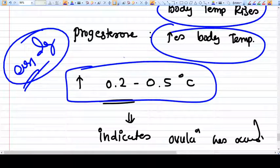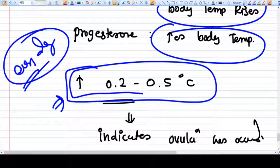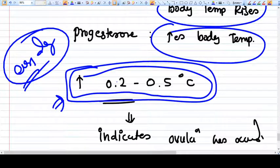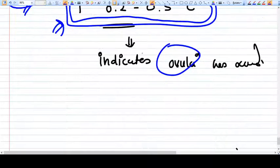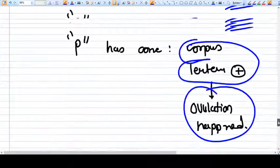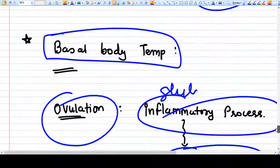You need to monitor the temperature every day, every single day of the cycle. And if you find that there is a sudden increase in the temperature above 0.2 to 0.5 degrees Celsius, then it indicates that ovulation has happened now. So this is how basal body temperature method works.